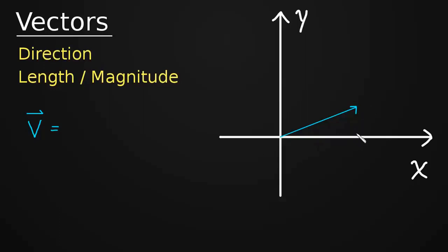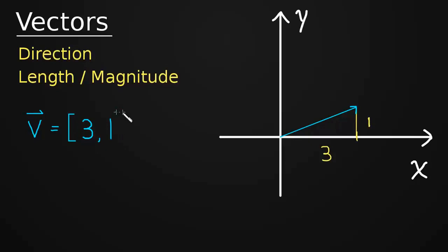This vector moves over a certain amount in the X direction — let's say it moves over 3 in X. It also moves a certain amount up in the Y direction — let's say it moves up 1. Now I can say that this vector is equal to its components. It's equal to its X component, which is 3, and its Y component, which is 1. This is the X component and the Y component.